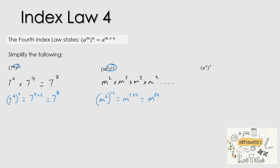Finishing with the last one: a to the power of 3, all to the power of 7. We're raising a power to another power, so we multiply the indices. That becomes a to the power of 7 times 3, which is a to the power of 21. A common error would be a to the power of 10.